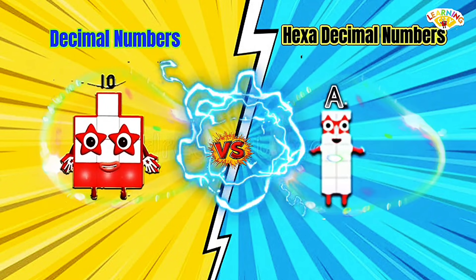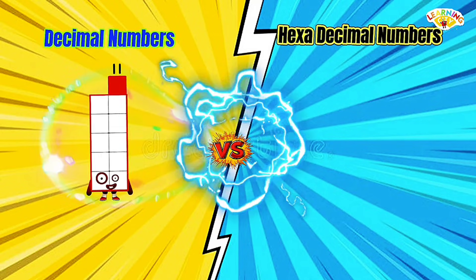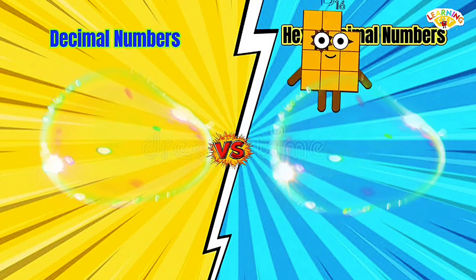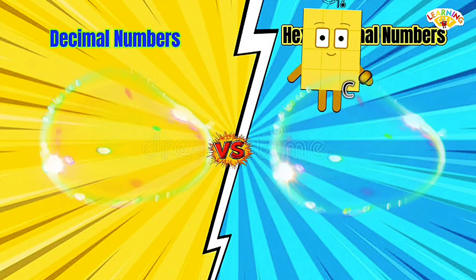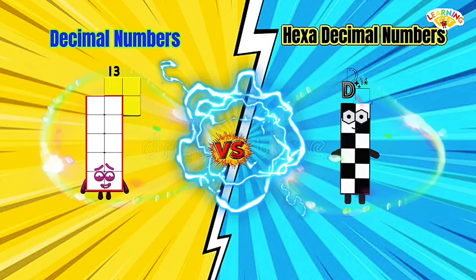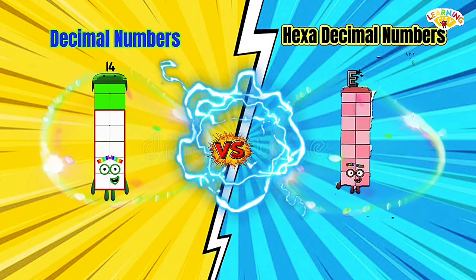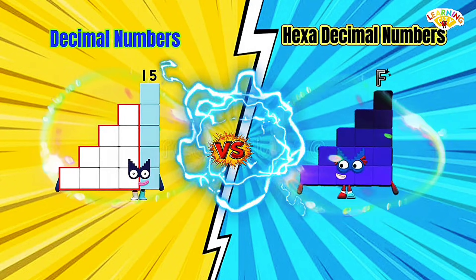Decimal 10 equals hexadecimal A. 11 equals B. 12 equals C. 13 equals D. 14 equals E. 15 equals F.